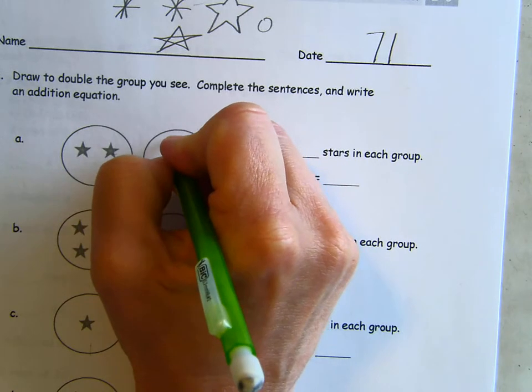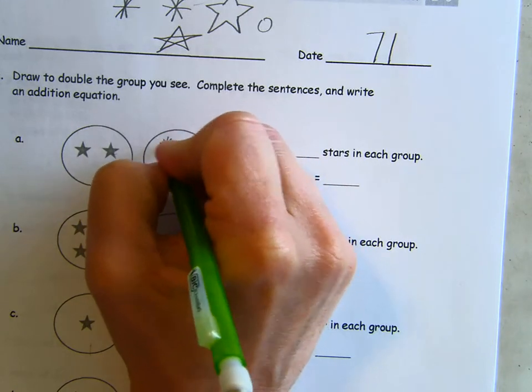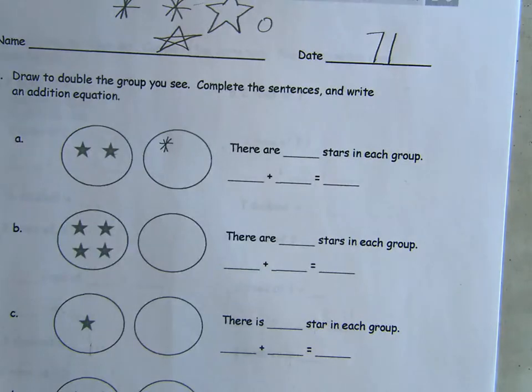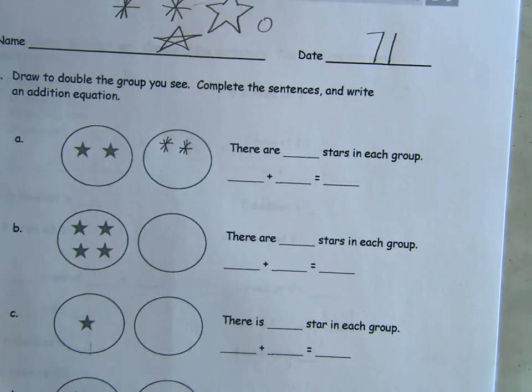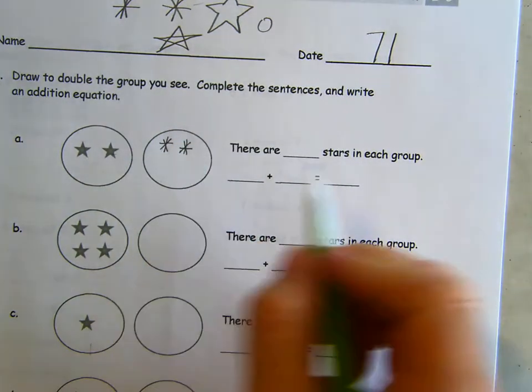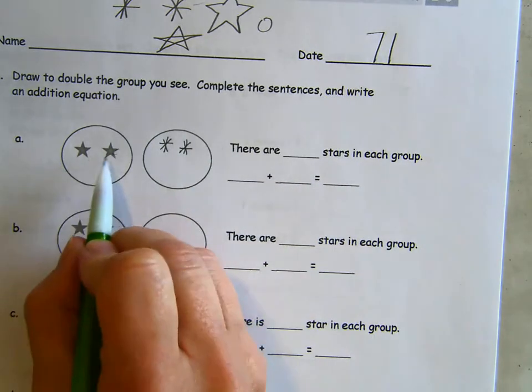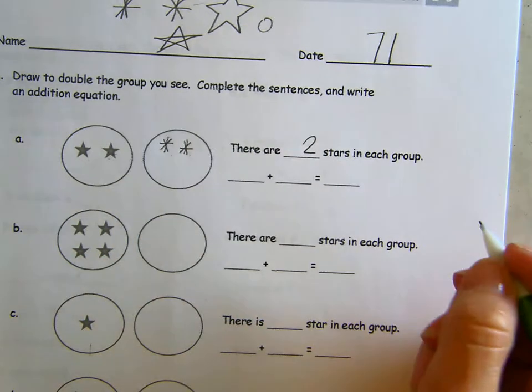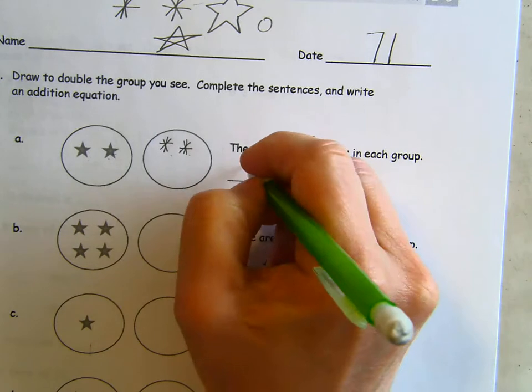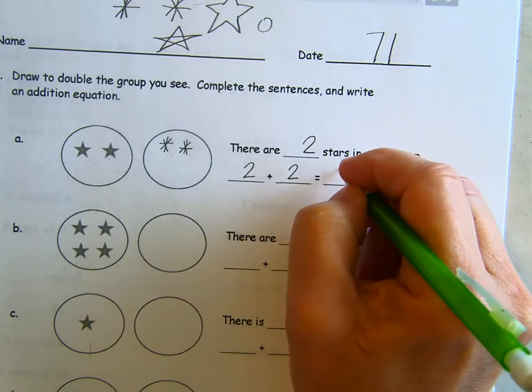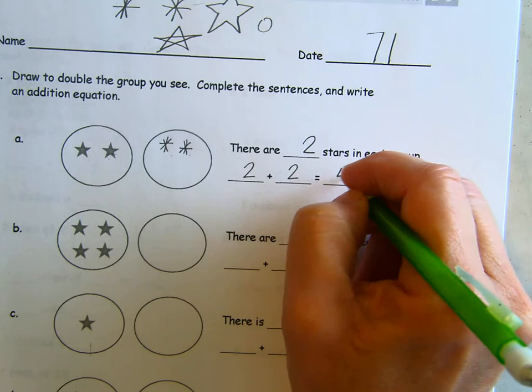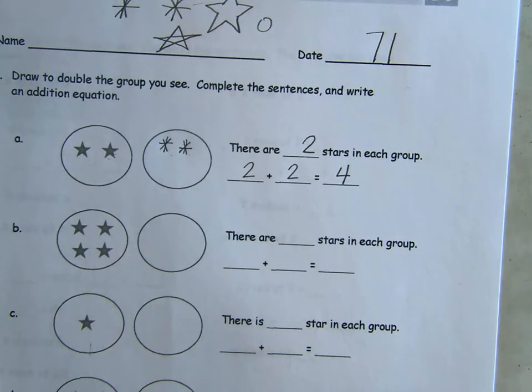There are two here. We're going to draw two here. I think this first time I'm going to do the snowflake kind of stars. One, two. So there are how many stars in each group? Two stars in each group. So our doubles fact is going to be two plus two. And how much is that? Two plus two is four.